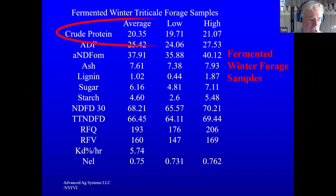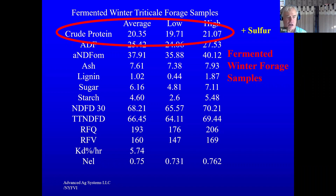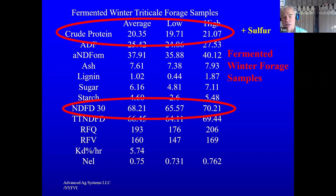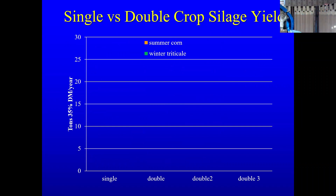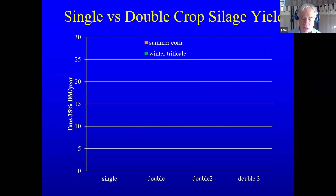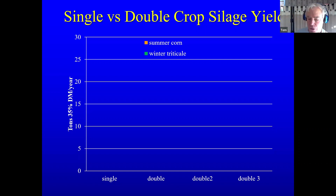Looking at it as a forage, it is one of the best forages we can produce. With proper nitrogen and sulfur, we run 20% crude protein, and the digestibility is better than brown midrib corn or sorghum — it's a very high-digestible forage. When we got into doing this, we learned early on that if we want to maximize the yield, we had to change how we were growing it. Originally we were growing it like wheat or a winter grain crop, and we found we needed to do the exact opposite.